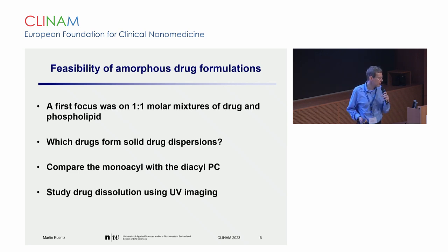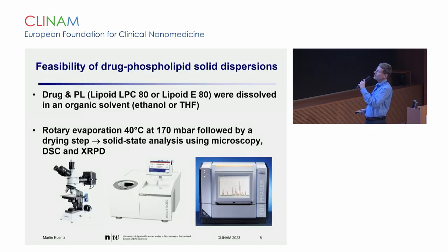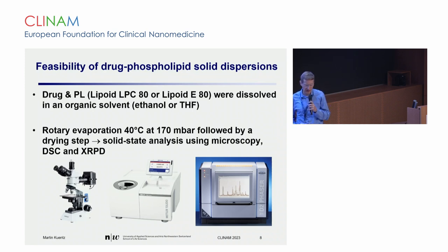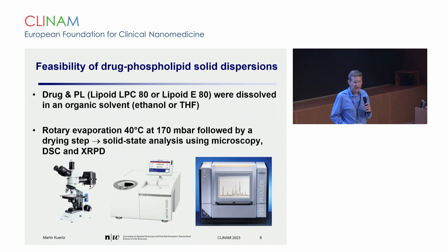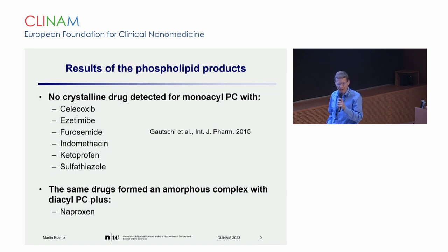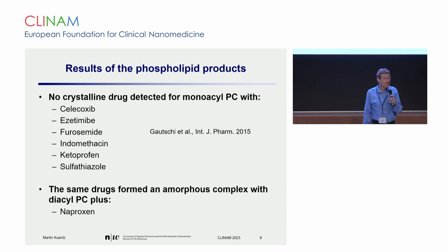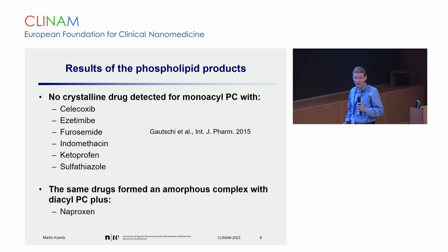Which compounds actually form such a solid amorphous complex as opposed to others that do not? These are the compounds we started with — not all of them, but how we got started. It was a solvent-based process: drug and phospholipids were dissolved in a common solvent like ethanol or THF. After drying, we looked at solid-state characteristics — crystallinity by XRPD, DSC, or polarized light microscopy. The first result is that amorphous complexes are actually often obtained. It's almost 50% — if you randomly pick poorly water-soluble drugs, you do get amorphous complexes at the one-to-one molar ratio.